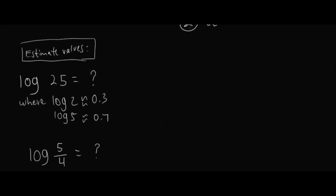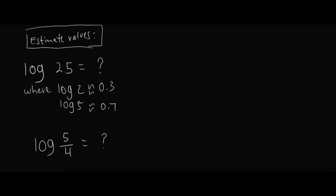Now let's get on to some practice problems utilizing these rules. We need to estimate values given that log 2 is approximately 0.3 and log 5 is approximately 0.7. We need to estimate the value of log 25 and log of 5 over 4. Pause the video and see if you can employ the rules and properties to estimate the values.